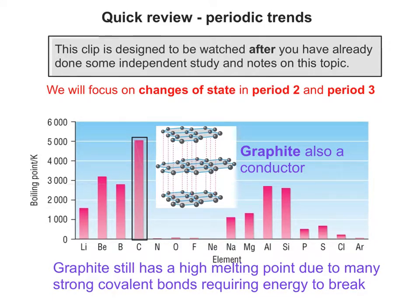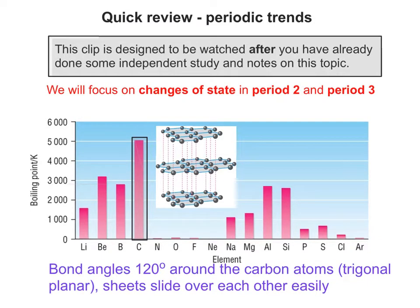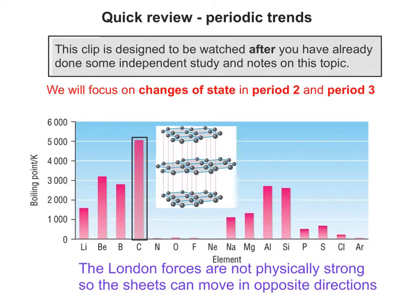Graphite still has a high melting point due to many strong covalent bonds requiring energy to break. The bond angles are 120 degrees around the carbon atoms, giving it a trigonal planar shape, and the sheets slide over each other easily. The London forces are not physically strong, so the sheets can move in opposite directions.